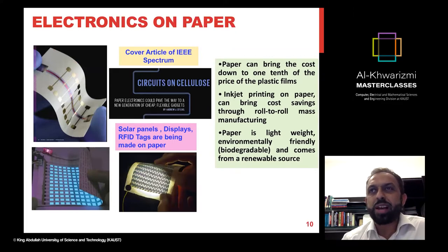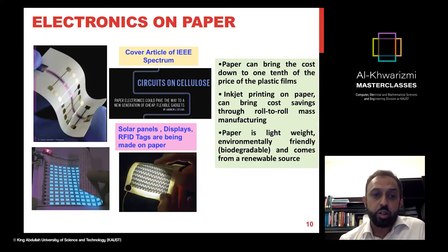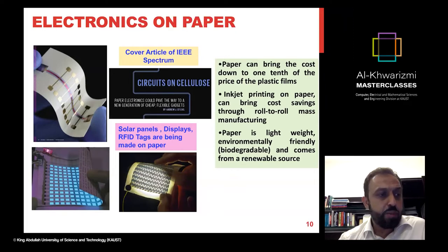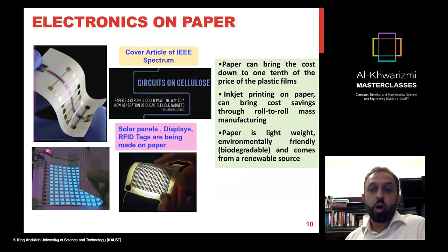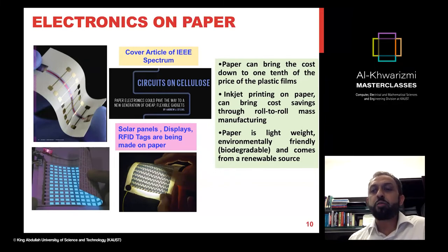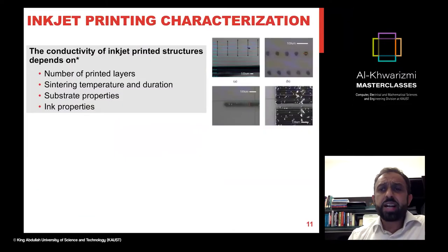When you think about printing, paper comes to mind, and indeed electronics are now being realized on paper: solar cells, RFIDs, and more. Paper is the cheapest substrate — about one-tenth the price of the cheapest plastic. It enables roll-to-roll manufacturing and is more environmentally friendly because paper is biodegradable, coming from a renewable source. Unlike plastic, it does not damage the environment, making it a very attractive substrate.